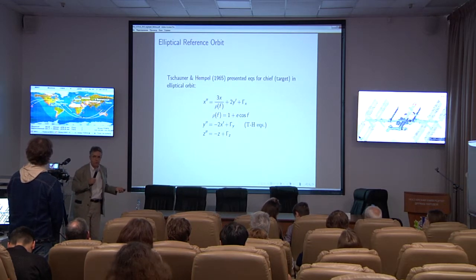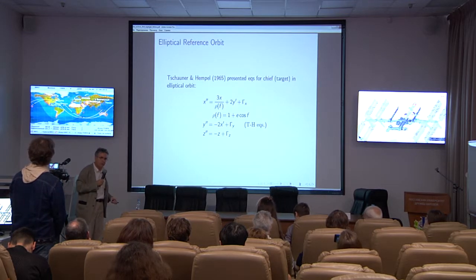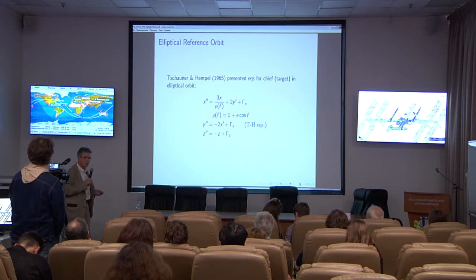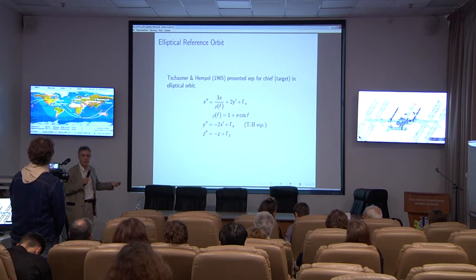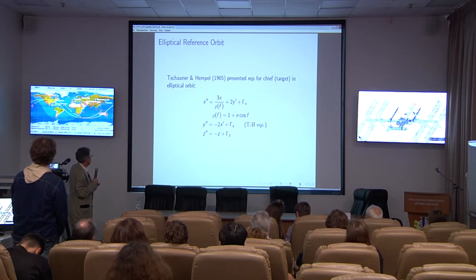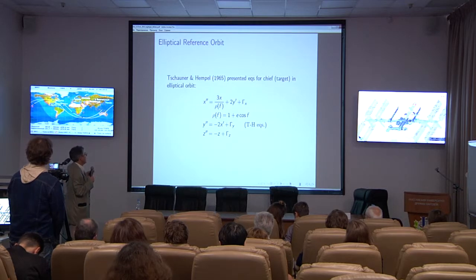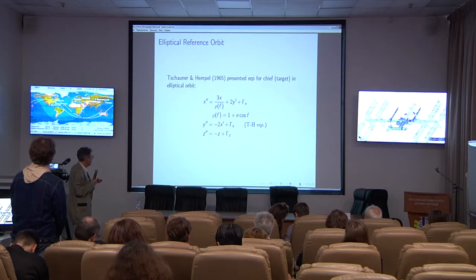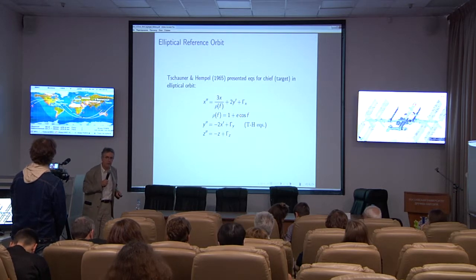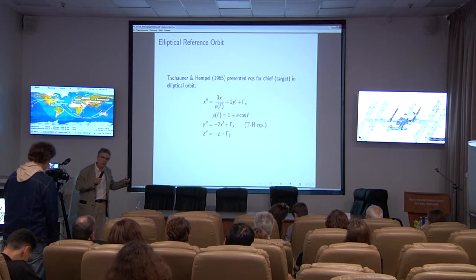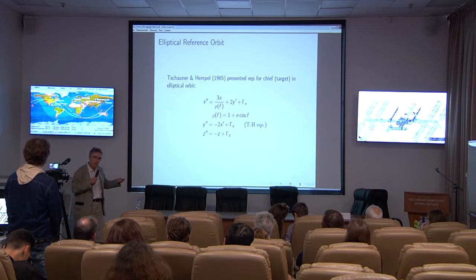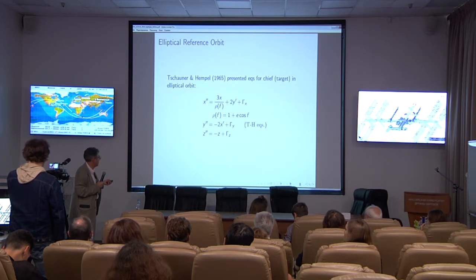Now I want to talk about elliptical reference orbits, because things become more interesting. If the chief spacecraft is in an elliptical orbit and the deputy spacecraft is also in an elliptical orbit, you have different orbital periods, and you can no longer represent the motion relative to something at a constant radial distance. The first to examine this were Schaener and Hempel in 1965. They present equations where the chief or target spacecraft is in an elliptical orbit. Derivatives are now with respect to true anomaly F — these are called the Schaener-Hempel equations, and they include the possibility of perturbing effects. You have a linear state transition matrix, which you can convolve with the perturbing effects to include them in the solution.